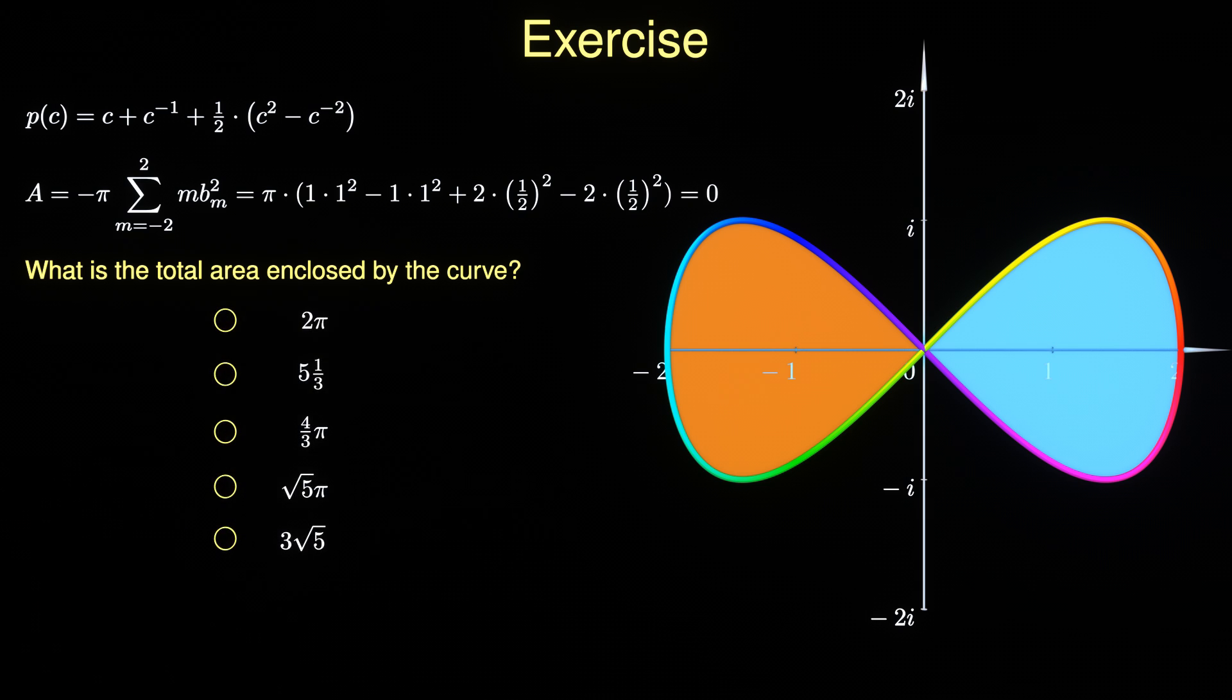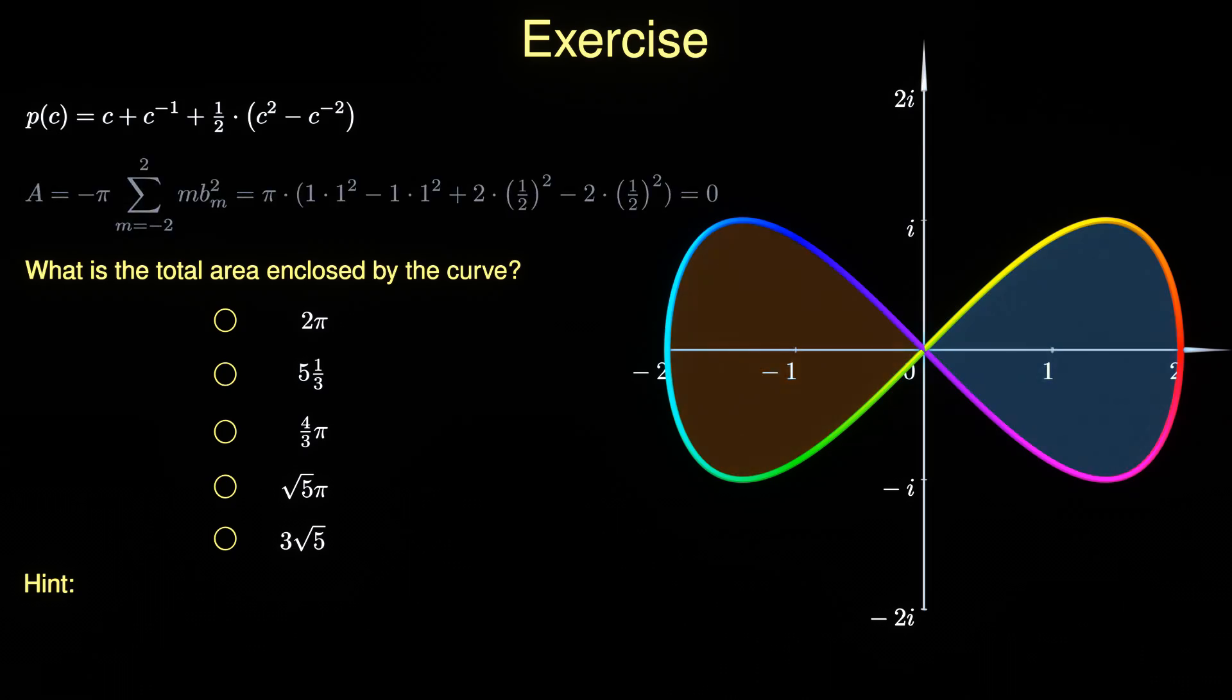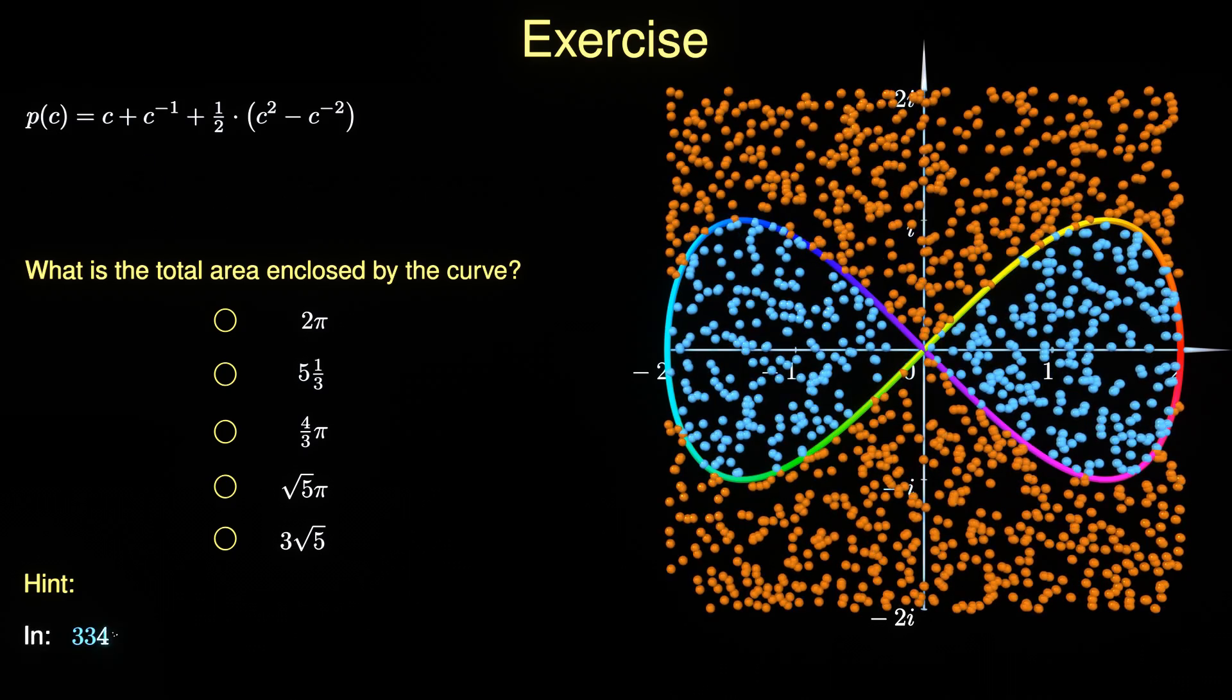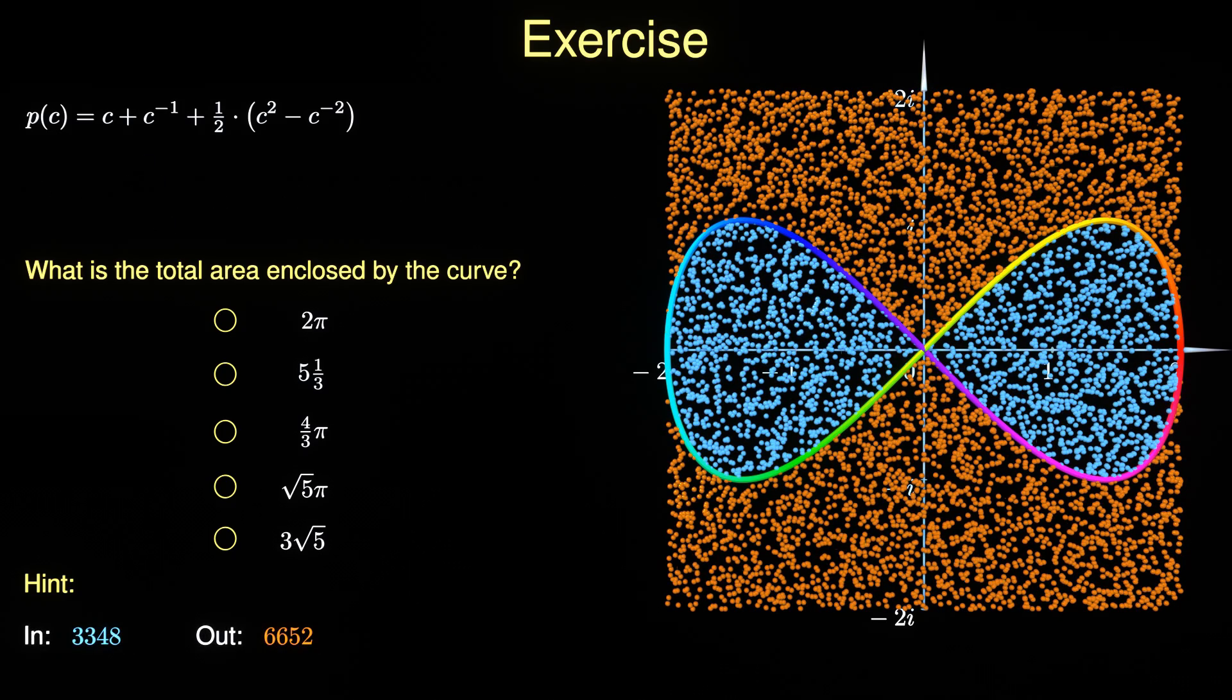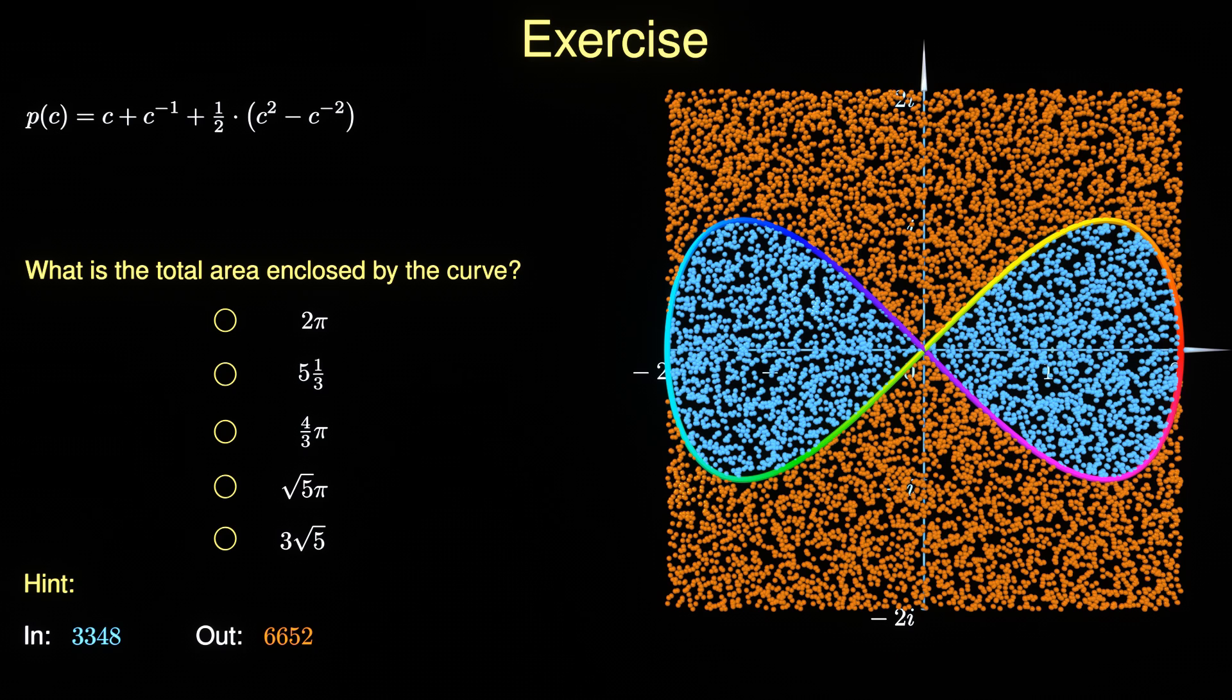For this particular simulation, 10,000 points were scattered randomly in the displayed part of the complex plane. Only 3,348 of them managed to hit the target area. This probabilistic argument can be translated into an area estimate.